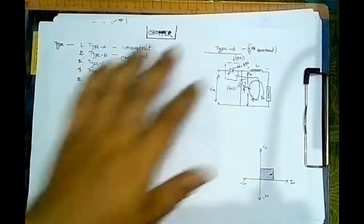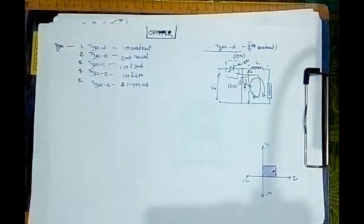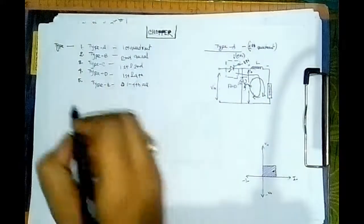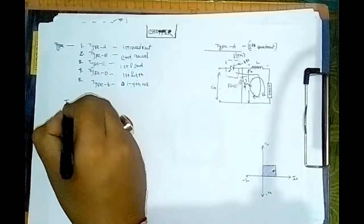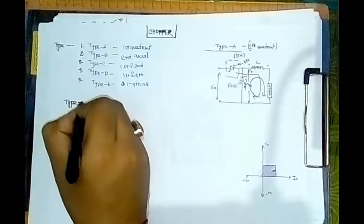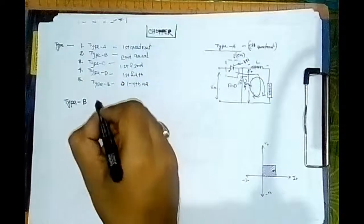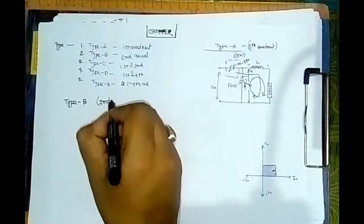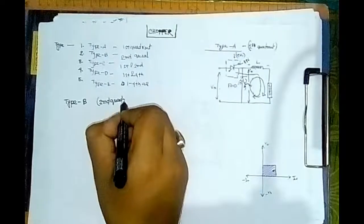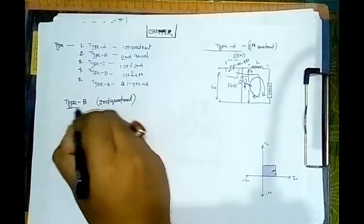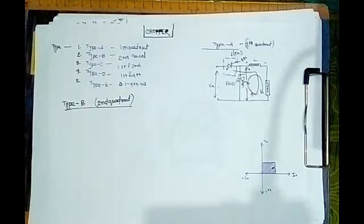Before that, I have discussed about Class A or Type A chopper, also called the first quadrant chopper. Now today we are going to talk about Type B or the second quadrant. Let us see how it looks like.